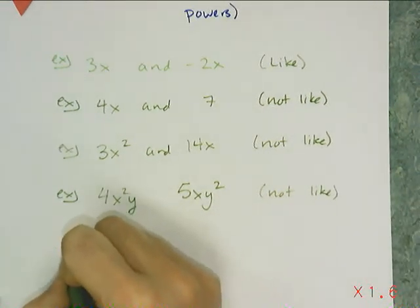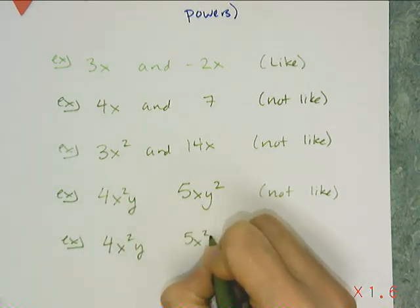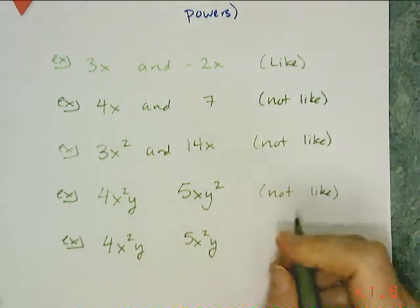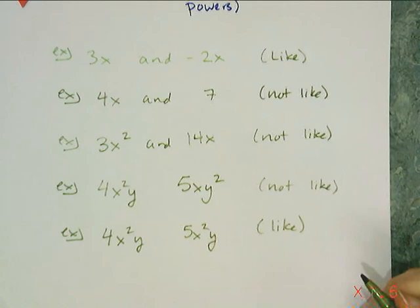But if I put the square on the same thing like 4x squared y and 5x squared y, then yes, these two terms can totally be combined into a single term of x squared y.